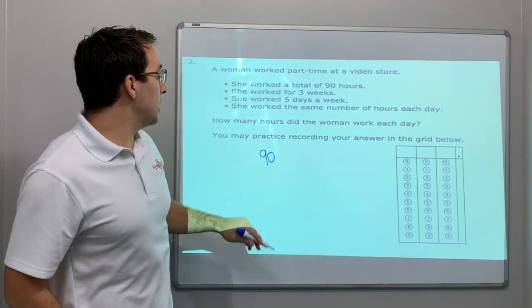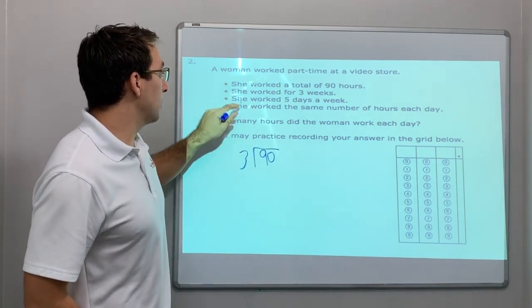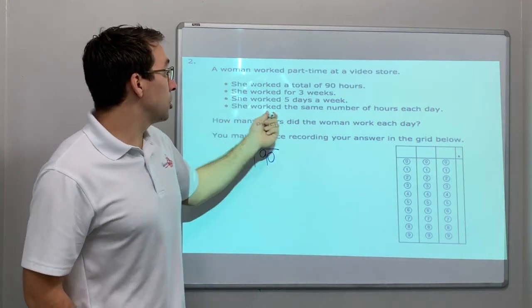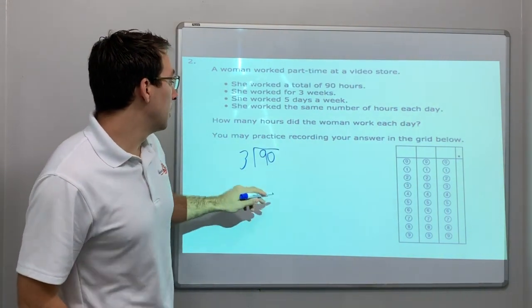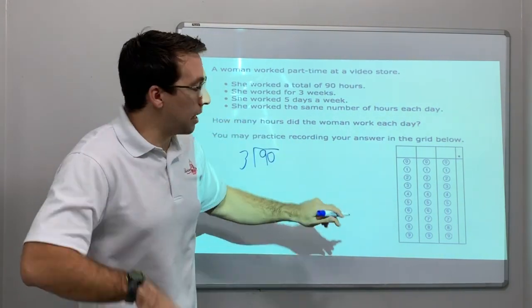She worked for three weeks. Divided by three. She worked five days each week. She worked the same number of hours each day. How many hours did the woman work each day? Same. The answer is six.